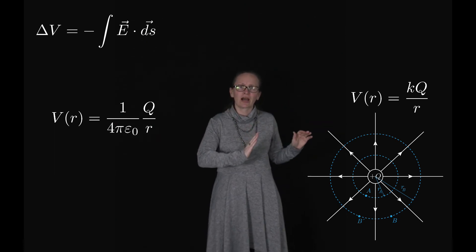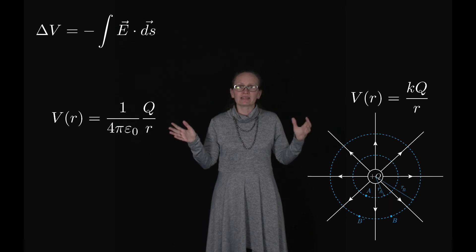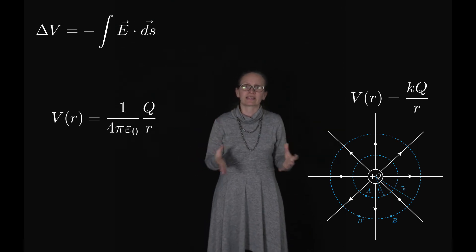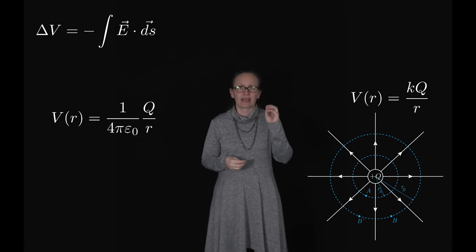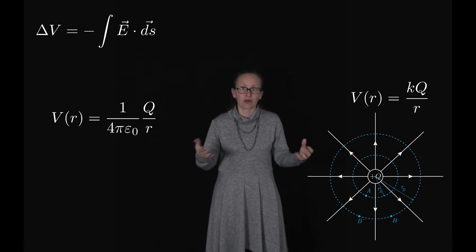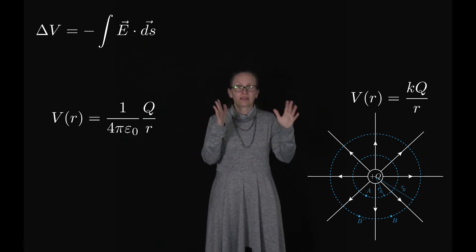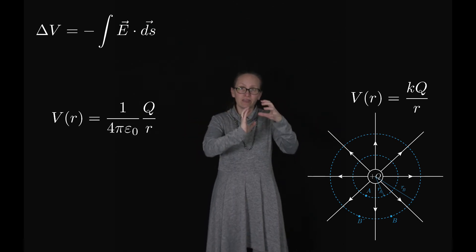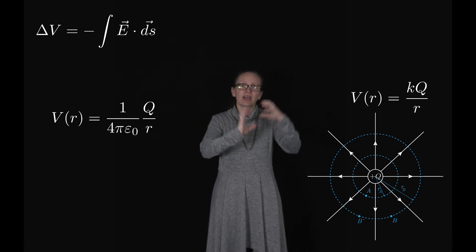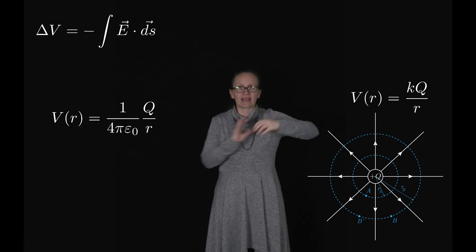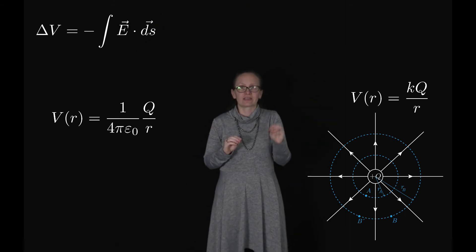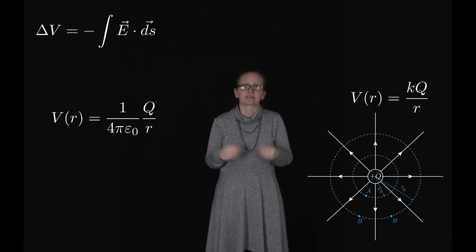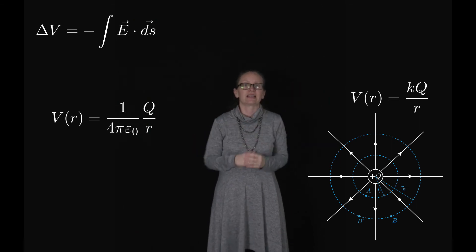This was derived for a point charge, but a sphere of charge has exactly the same external electric field as a point charge — as shown using Gauss's law. So this potential expression also works for a sphere of charge, giving the potential at different radii from the center, as long as those radii are greater than the radius of the sphere itself.